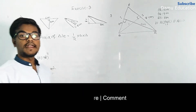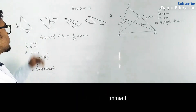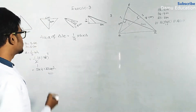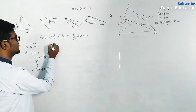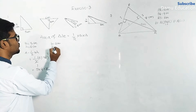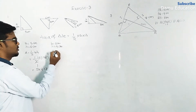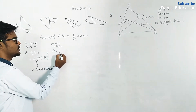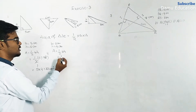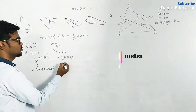For the next triangle, 4 centimeters and 6 centimeters are given. So base will be 6 and height will be 4. Area equals half into base into height, that is half into 6 into 4.